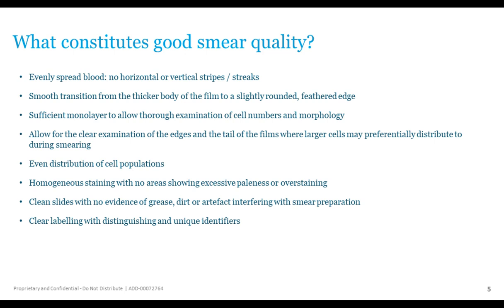One way to assess smear quality is to look at artifacts or cell shape. For example, if cells appear elliptocytic but all point with their long axes in the same direction, it suggests a spreading artifact, and one would have to be cautious about drawing a conclusion of hereditary elliptocytosis. Knowing we've got a good quality smear is the starting point.